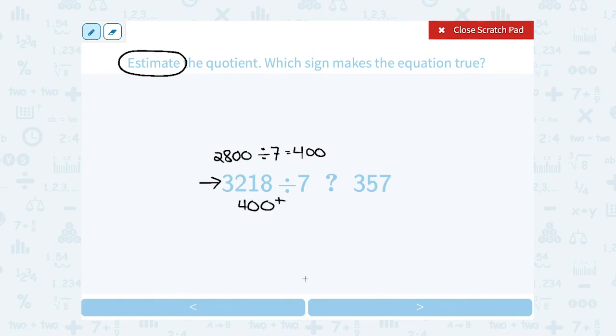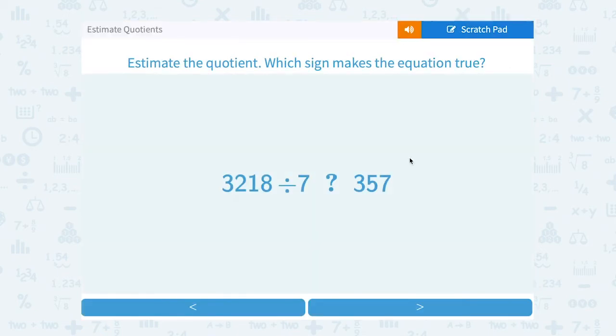Well, if I know my answer is a little more than 400, that's enough to answer this question, because 400 is already greater than 357. So the answer that's more than that definitely has to be greater than 357. So we're going to fill in our question mark with the greater than symbol.